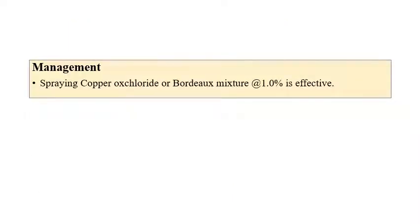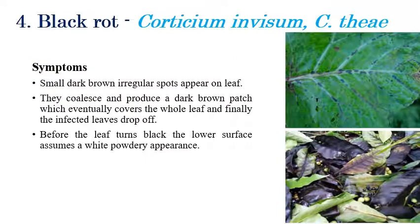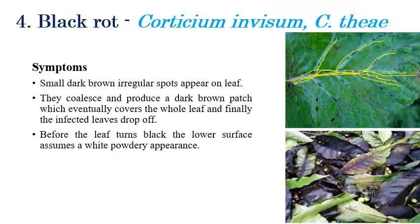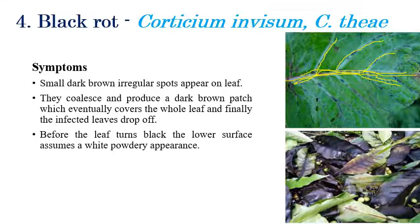For management of gray blight, spraying of copper oxychloride as well as Bordeaux mixture at one percent can manage this disease very effectively. For black rot disease, initially in the midrib region, small black irregular dots can be seen. Later, these small irregular dots spread to all remaining plant parts, eventually covering entire leaves.